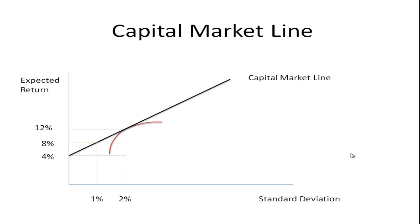If we look at this on the graph, you can see that if you take this level of risk, this is the expected return you would get. This is a person who would put, for example, half their money in the risky portfolio — the market — and half their money in treasury bills.